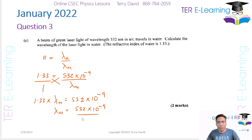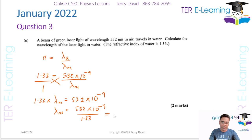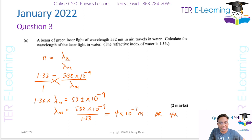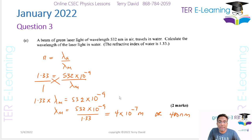So λm equals 532 times 10 to the minus 9 divided by 1.33, which gives approximately 4 times 10 to the minus 7 meters, or equivalently 400 nanometers. Those are two ways to write the same answer. Two marks for that.